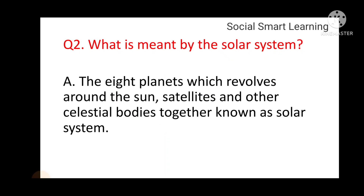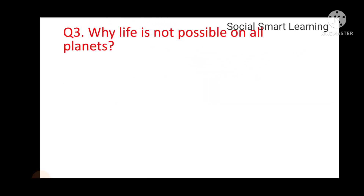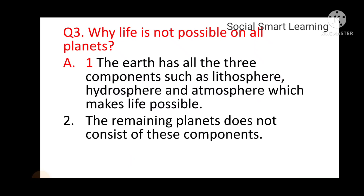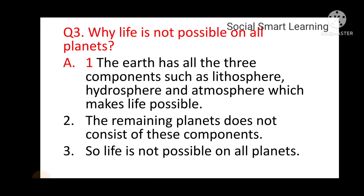Question 3: Why is life not possible on all planets? The earth has all three components — lithosphere, hydrosphere, and atmosphere — which make life possible. The remaining planets do not consist of these components, so life is not possible on all planets.